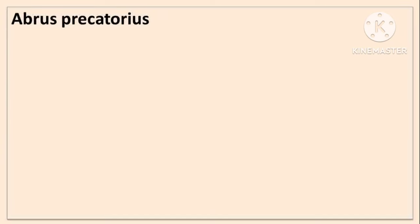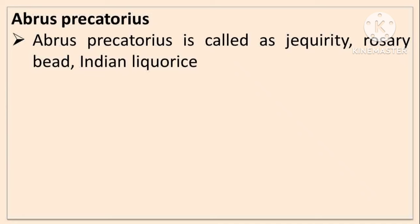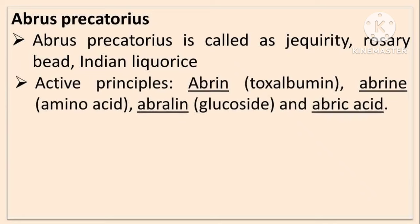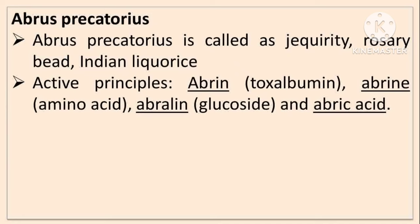First is Abrus precatorius. It is also called as Jequirity, Rosary bead, or Indian licorice. The active principles are Abrin — it is a Toxalbumin or Phytotoxin — Abrin amino acid, Abrelin glucoside, and Abric acid. Abrin is the important Toxalbumin active principle.